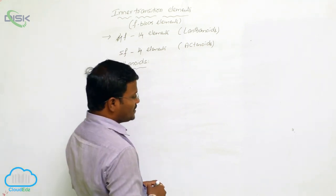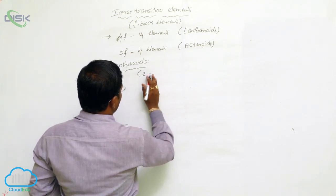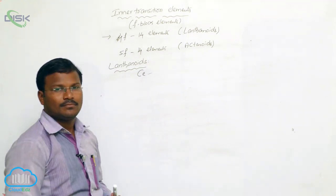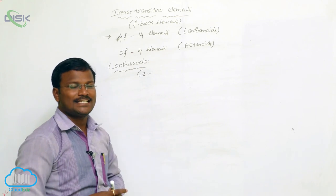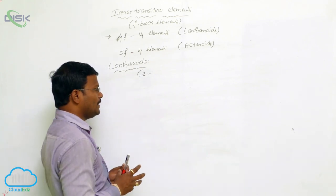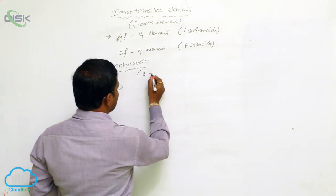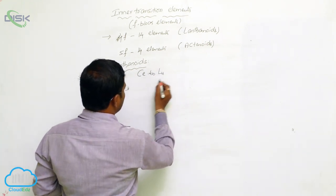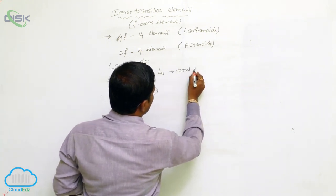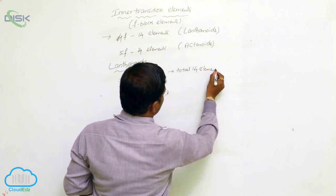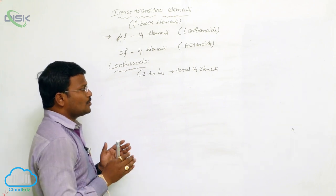The lanthanide series starts with cerium and proceeds through neodymium, samarium, europium, gadolinium, terbium, dysprosium, holmium, erbium, thulium, and ends with lutetium. From cerium to lutetium, there are a total of fourteen elements in this series.